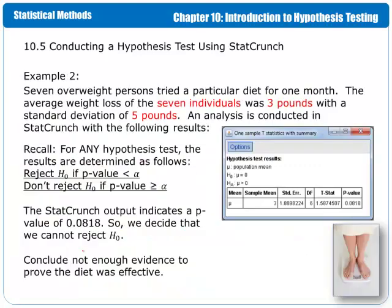Here's another example. Seven overweight persons tried a particular diet for one month. The average weight loss of the seven individuals was three pounds, with a standard deviation of five pounds. In order to do this in StatCrunch, you enter the appropriate values. You have the null hypothesis that the individuals did not lose weight versus that they did lose weight. If the diet was not effective, then on average either weight was not lost, meaning zero, or weight was gained. So these are our null and alternative hypotheses.